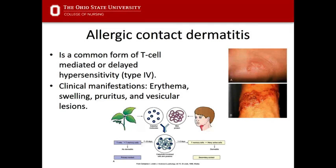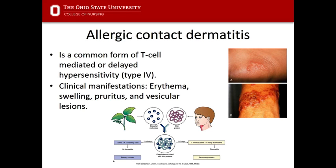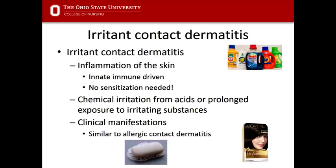Removal or avoidance of the stimulus is the best way to prevent allergic contact dermatitis. You can also treat with steroids and anti-itch creams, but we won't test you on treatment. The next type is irritant contact dermatitis. This has nothing to do with allergy — it is not a type 1, 2, 3, or 4 hypersensitivity. There is inflammation of the skin, but it's innate immune driven, so no sensitization is needed.